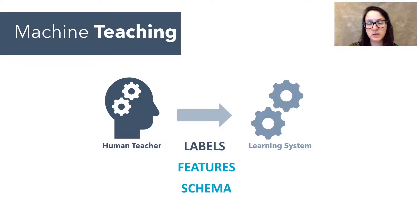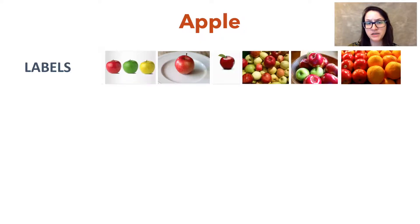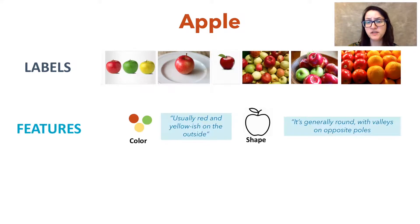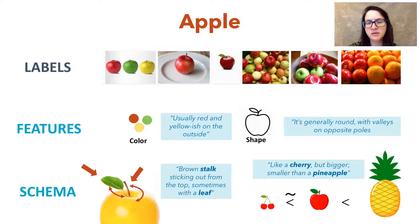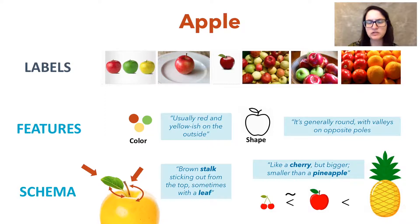As for what these mean, say you want to teach a learning agent to recognize apples in images. Teaching via labels would consist of showing lots and lots of examples, whereas teaching with features would be more like telling it to pay attention to color and shape as key characteristics of apples. In schema, it's about constraints and relations, like that apples have stocks and sometimes a leaf attached to said stock.